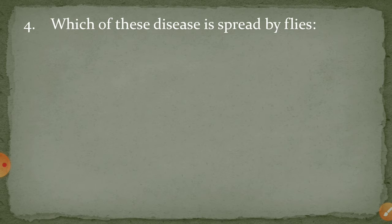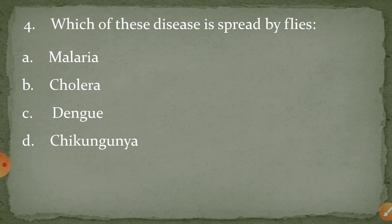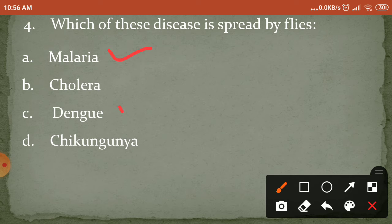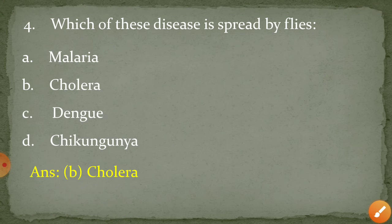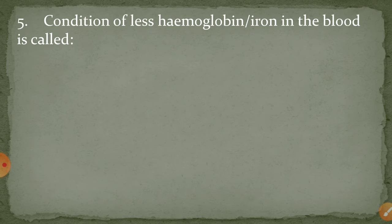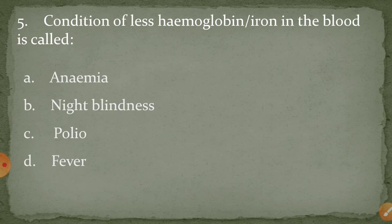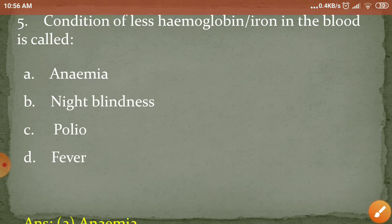Next question: which disease is spread by flies? Also, if hemoglobin ya iron jo hai blood mein kam ho jaaye — yaani agar aapke blood mein hemoglobin aur iron kam ho jayein — toh woh condition kya kehlati hai? The answer is anemia.